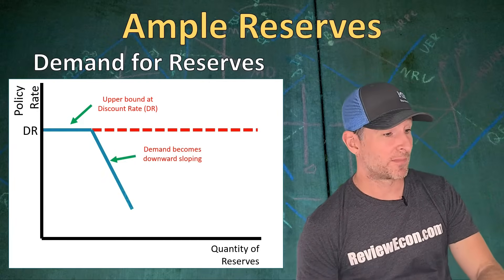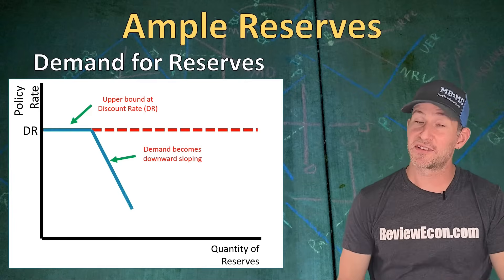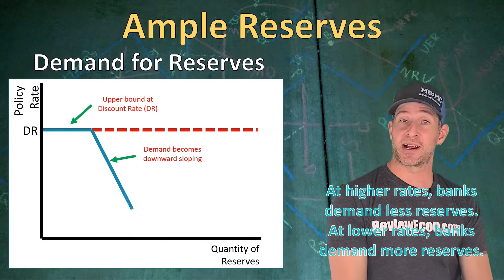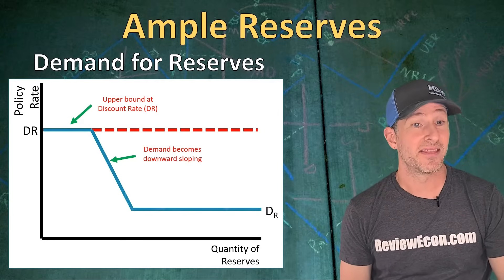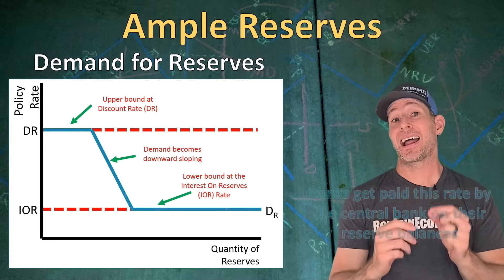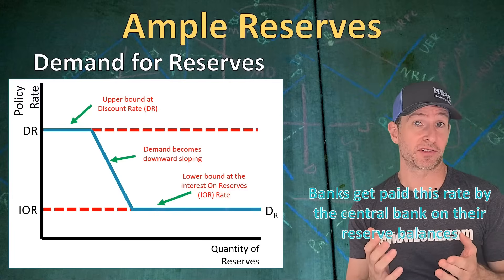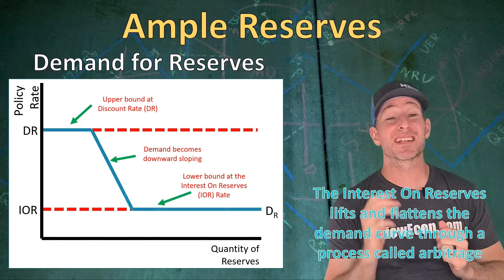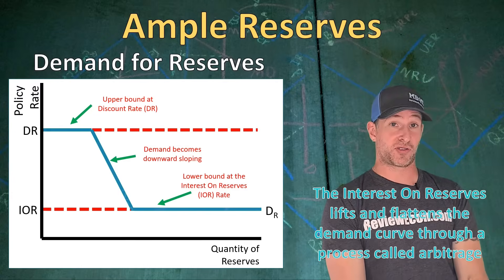Next, there is a downward sloping portion of the demand curve: at higher policy rates banks demand fewer reserves, and at lower policy rates banks demand more reserves. Finally, we have another horizontal portion — the lower bound of the demand for reserves — which is flat at the interest on reserves rate. That is the interest rate that the Federal Reserve and other central banks with ample reserves pay banks on their reserves. The interest on reserves lifts and flattens the lower portion of the demand curve through a process called arbitrage.